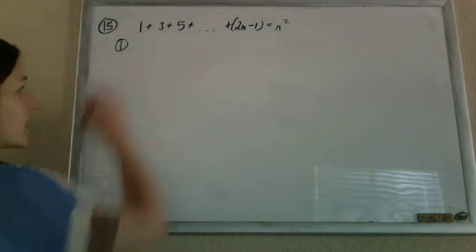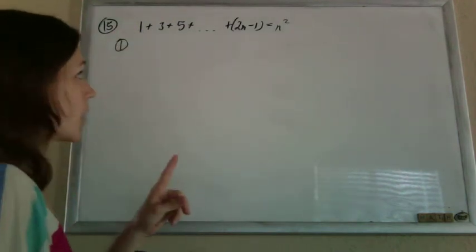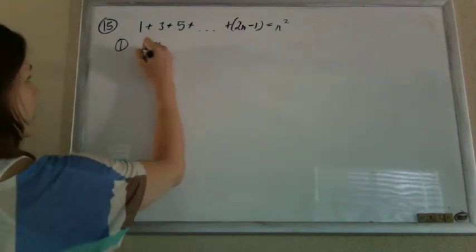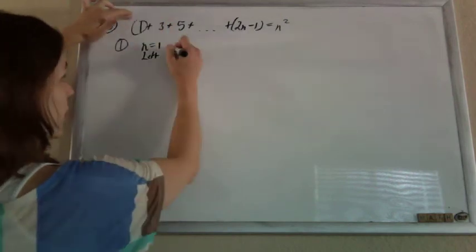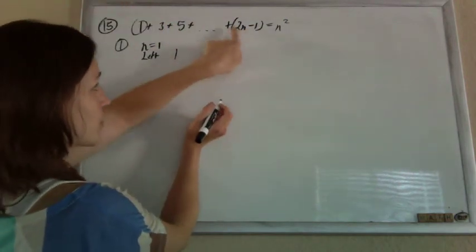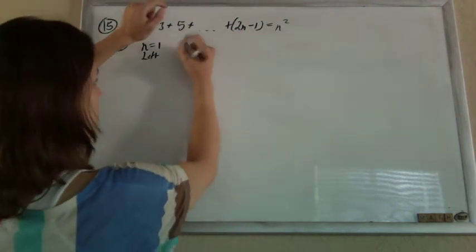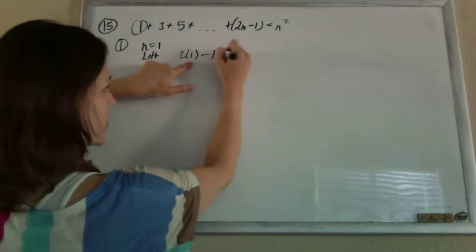The first step in a proof by induction is always to prove that it works for the first number. So get some starting spot. We're going to say when n is 1, the left side is just the first number, right? You can see it there is 1. You can also tell that it works from the formula generating the left side: 2 times 1 is 2 minus 1 is 1.